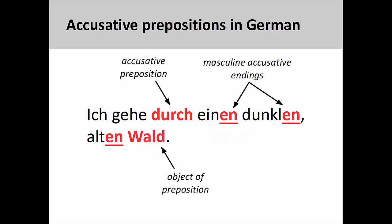We could, for example, insert more adjectives into the phrase. Ich gehe durch einen dunklen alten Wald. I go through a dark, old forest. And they would all take accusative endings.